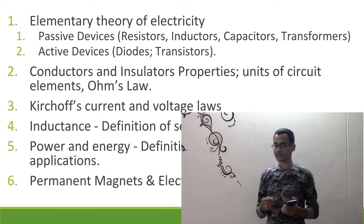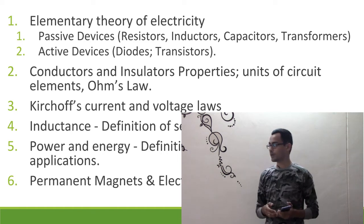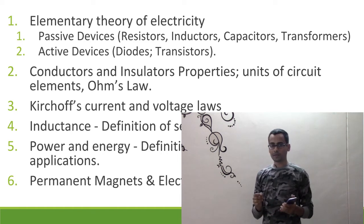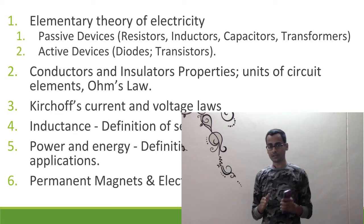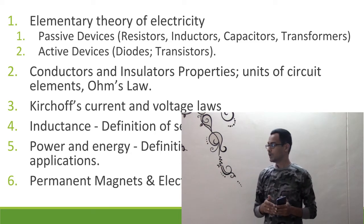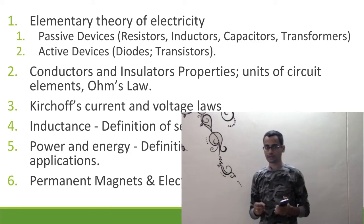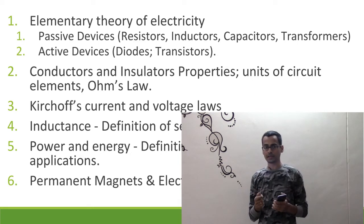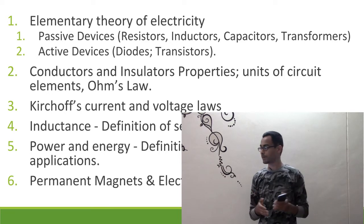Following that, you understand some of the very basic devices which form any electrical or electronic circuit — for example, passive devices like resistors, inductors, capacitors and the transformer. You also understand some of the active devices. If you are not familiar with what all these terms mean, don't worry — we will be going into detail of each and every term in future episodes. Active devices include diodes and transistors, which are the basic components of a complete electrical circuit.